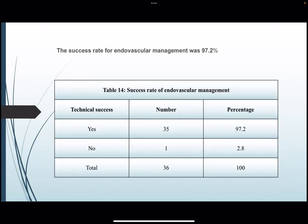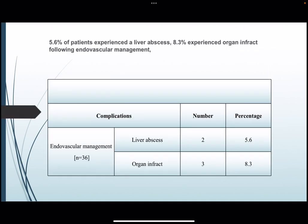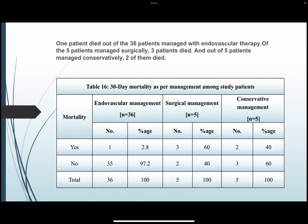The success rate for endovascular management was 97.2%. As complications following endovascular management, 5.6% of patients experienced liver abscess and 8.3% experienced organ infarct. One patient died out of the 36 managed with endovascular therapy. Of the five patients managed surgically, three patients died, and out of the five patients managed conservatively, two patients died.